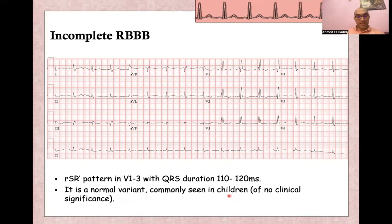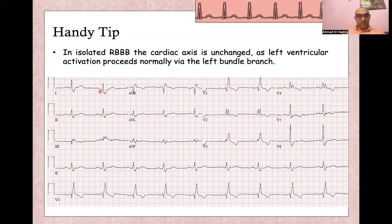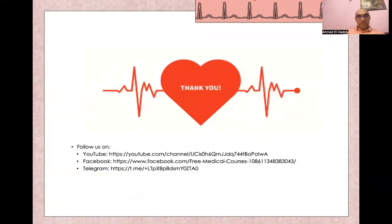A handy tip: right bundle branch block is sometimes isolated. In isolated right bundle branch block, the axis of the heart is not changed. As you can see here, there is RSR' morphology and a deep S wave in V6 — right bundle branch block morphology — and the axis is normal. Comparing lead I and lead AVF confirms normal heart axis. So this is isolated right bundle branch block, not associated with right ventricular hypertrophy. Thank you so much, and see you in the next one.